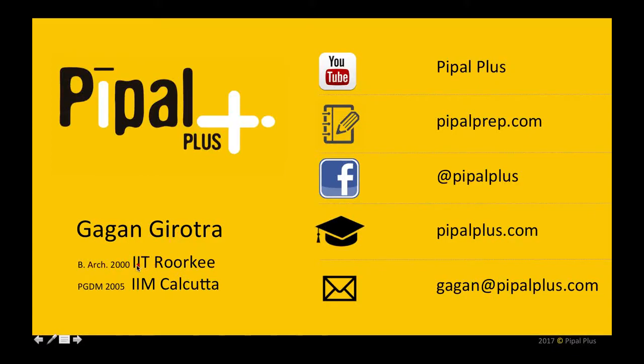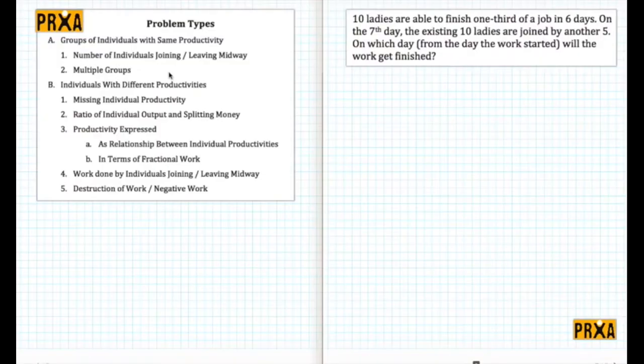This is Gagan Girotra from IT Roarki class of 2000 and Calcutta class of 2005. In the last video, we studied two different kinds of problems: one is the group of individuals with same productivity, and the second is individuals with different productivity. In this video, we are going to take on the first kind of problem.